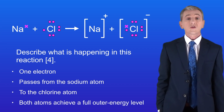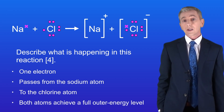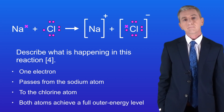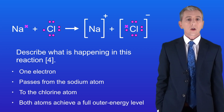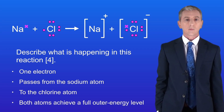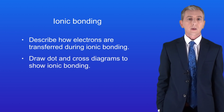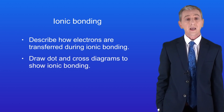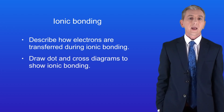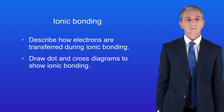You'll find plenty of questions on ionic bonding in my revision workbook, which you can get by clicking on the link above. In the next video we're going to look at ionic bonding between a group 2 metal and a group 6 non-metal. Hopefully now you should be able to describe how electrons are transferred during ionic bonding and draw dot and cross diagrams to show ionic bonding.